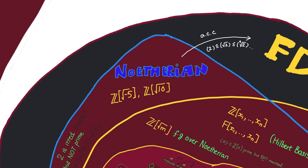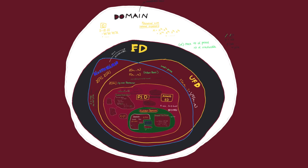Later you will see that even though Noetherian domains do not always have unique factorization, those Noetherian domains that are of dimension 1 and integrally closed do have unique factorization — but not into prime numbers. Instead, they have unique factorization into prime ideals. We call such Noetherian domains Dedekind domains. An example is the ring of algebraic integers of an algebraic number field. That's an extremely fast recap of factorization in a domain.